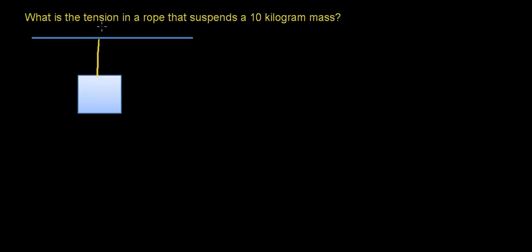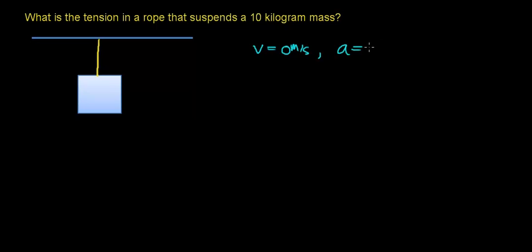In this video, we're going to try to figure out what the tension in a rope is that suspends a 10 kilogram mass. We're going to make a few assumptions: this box is at rest, moving at 0 meters per second, and we're in a reference frame that is not accelerating, so the acceleration of this object is 0 meters per second squared.